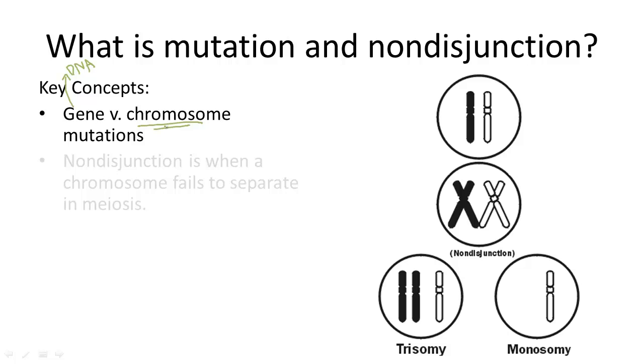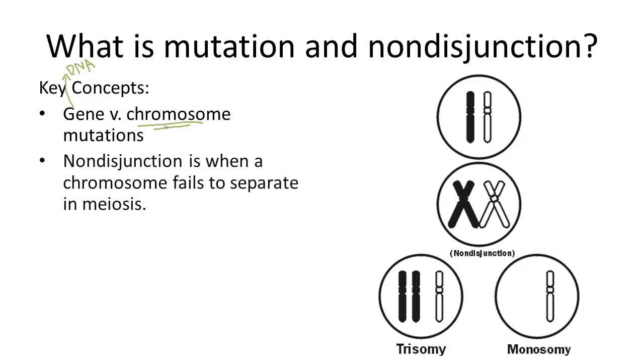These mutations are caused by what we call non-disjunction, which is when chromosomes fail to separate properly during meiosis.